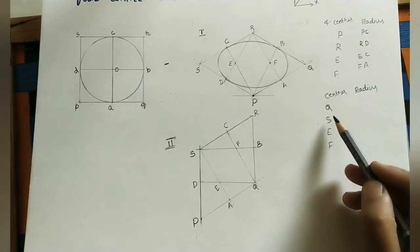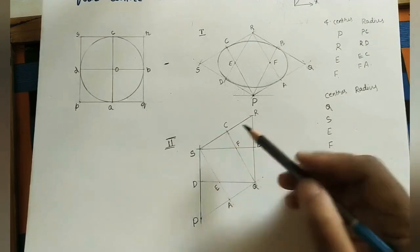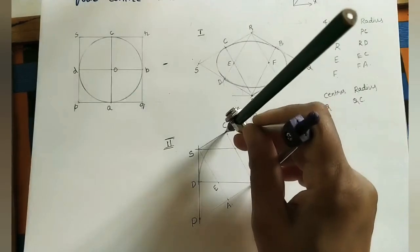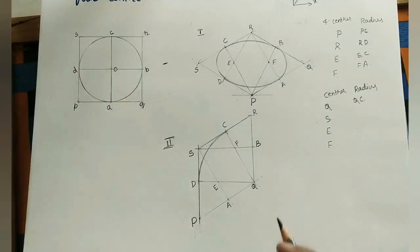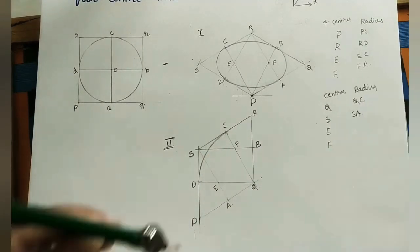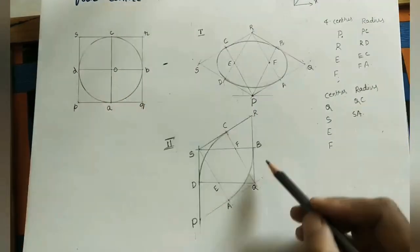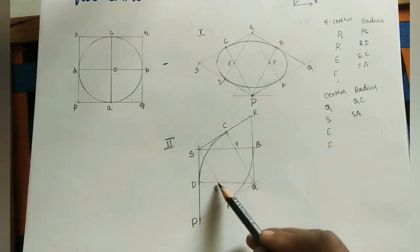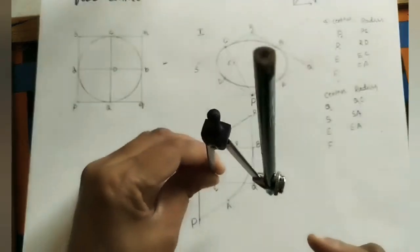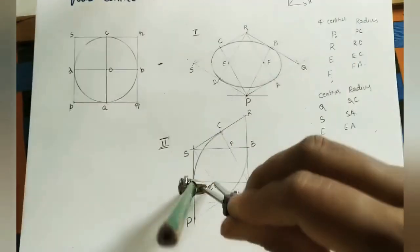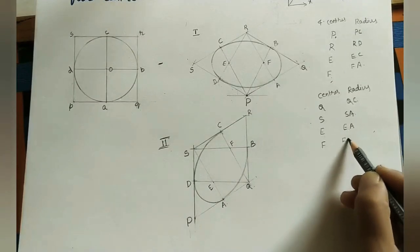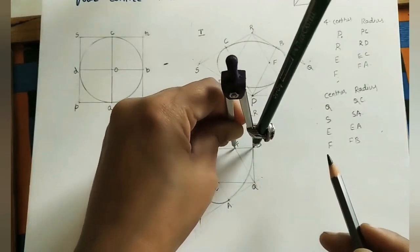Now with these four centers draw the arcs. With Q as center and QC as radius, do an arc. With S as center and SA or SB as radius, do an arc. With E as center and EA or ED as radius, do an arc. With F as center and FB or FC as radius, do an arc. Joining these four arcs gives the complete ellipse for the second method.